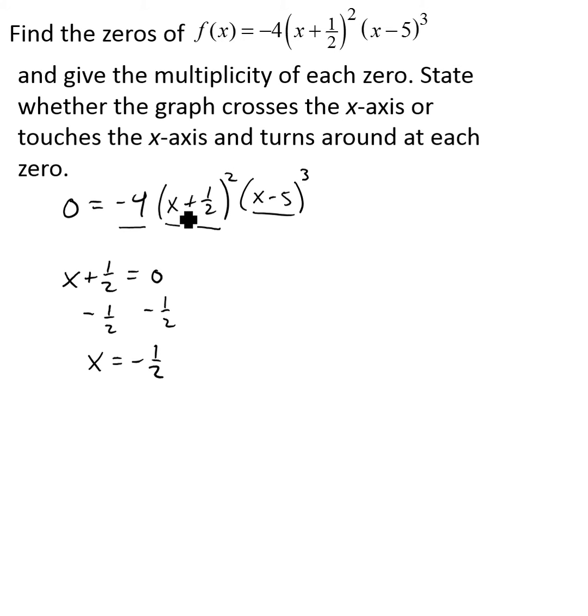And so because I would have that x plus one-half factor twice, I would get this solution, x equals negative one-half, twice. And so this zero, x equals negative one-half, has a multiplicity of two. Now, we get that zero two times.